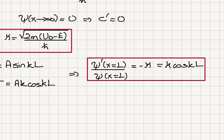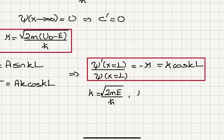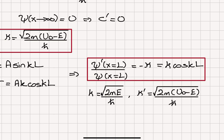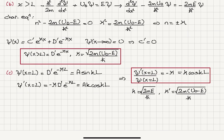This tells us that the allowed energy values can be calculated from the equation k·cot(kL) = −κ, where k = √(2mE)/ℏ and κ = √(2m(u₀ − E))/ℏ. That follows from our definitions of k and κ.